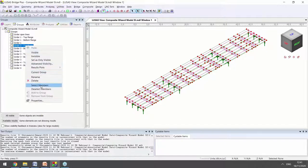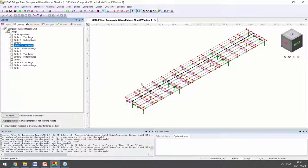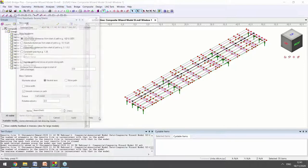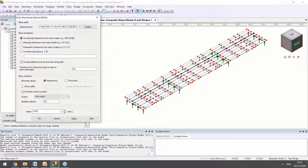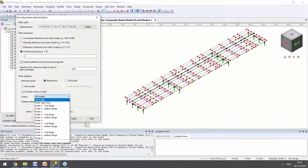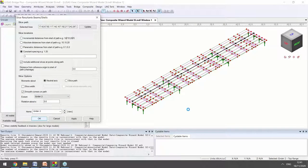And we can do that by creating a slice. So if we select the top flange, we can use this to define the centre line of our girder 2 beam. Go to utilities, slice resultants. Going to go with constant spacing of one metre. And ask LUSAS every metre along this centre line we've defined to calculate the total bending moment of all of the elements added together. And we're going to tell it that only members within the girder 2 group can be used for this.